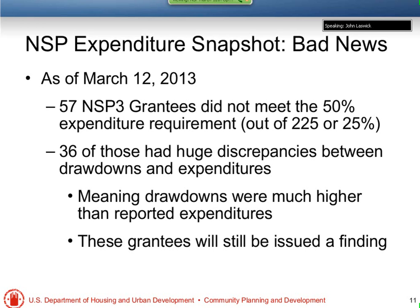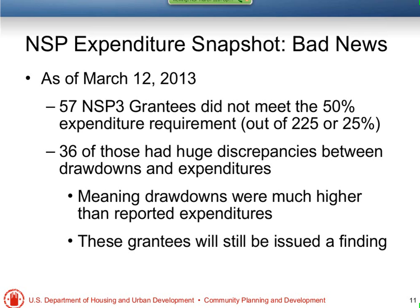NSP-3 is a little worse off — we kind of expected that. We have 57 NSP-3 grantees that have not met the 50% expenditure requirement, which is about 25% of the 225 total that have met the deadline. But again, 36 of those had really big discrepancies between drawdowns and expenditures. Even though 57 grantees are going to get findings, a lot of those drawdowns were over 50% or really close to 50%. We just want to encourage all grantees who haven't met their deadline yet to get into DRGR and update your numbers.